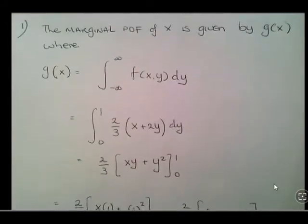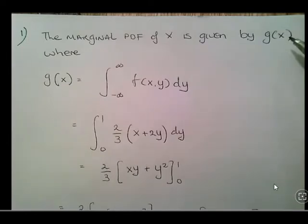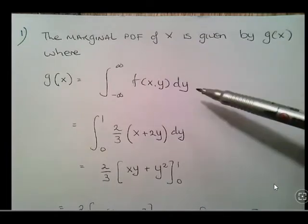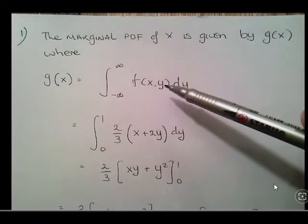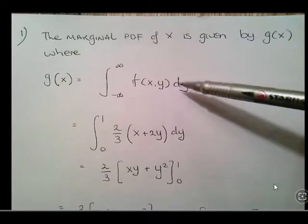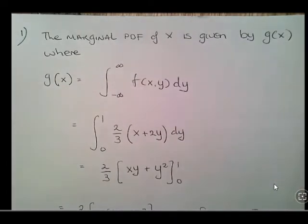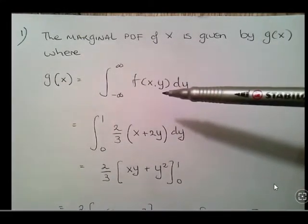The marginal PDF of x is given by g of x — we use g to differentiate it from f, since we used f already. This is the full formula: we take the joint PDF f of x and y and integrate it with respect to y between minus infinity and infinity. You can actually break up the integral over various regions.